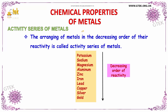Let us discuss the chemical property of a metal in terms of the activity series. The arranging of metals in decreasing order of their reactivity is called the activity series of a metal. The decreasing order of reactivity starts from potassium, sodium, magnesium, aluminium, zinc, iron, lead, copper, silver, and gold.